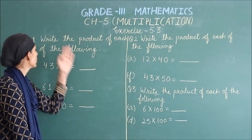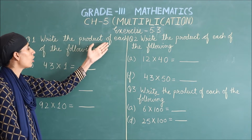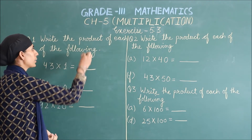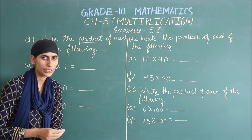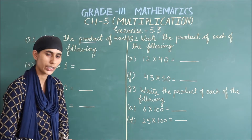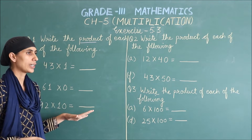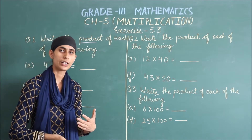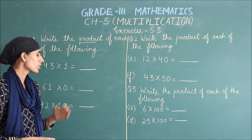Your Question 1 is: write the product of each of the following. Product کا meaning — ہمیں پتا ہے کہ ہم دو نمبر کو multiply کریں گے تو ہمارے پاس product ہی آئے گا۔ ٹھیک ہے؟ Question کو start کرنے سے پہلے، کچھ properties ہوتی ہیں multiplication کی جو ہمیں پتا ہونا چاہیے۔